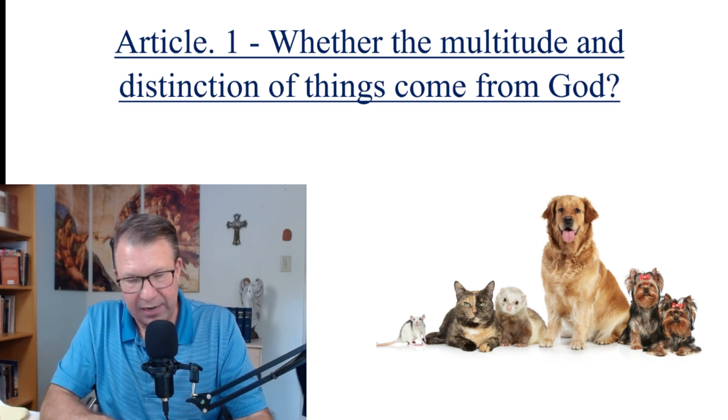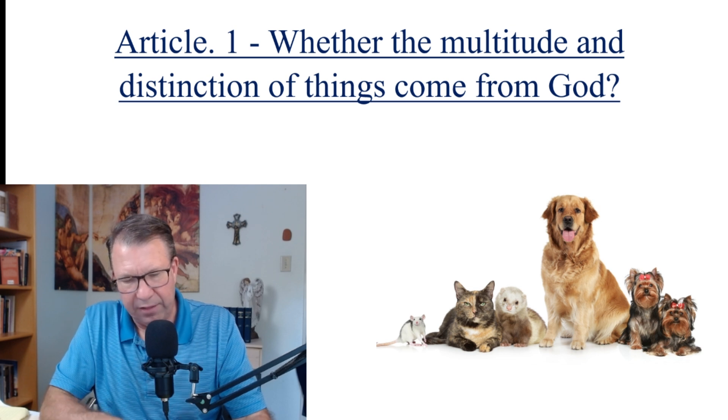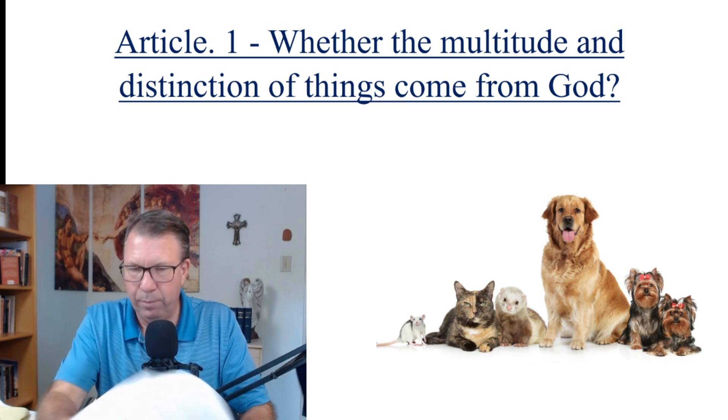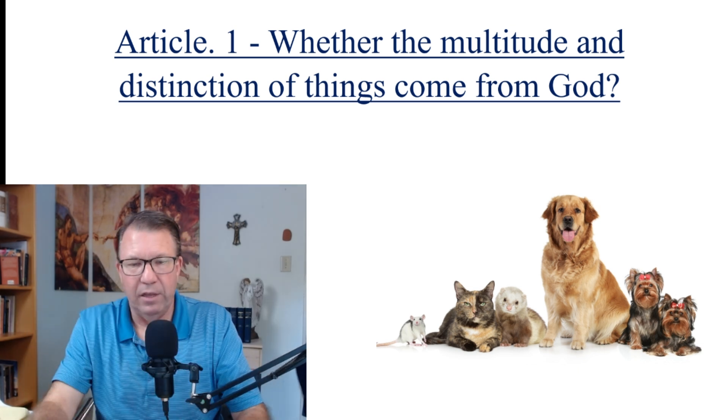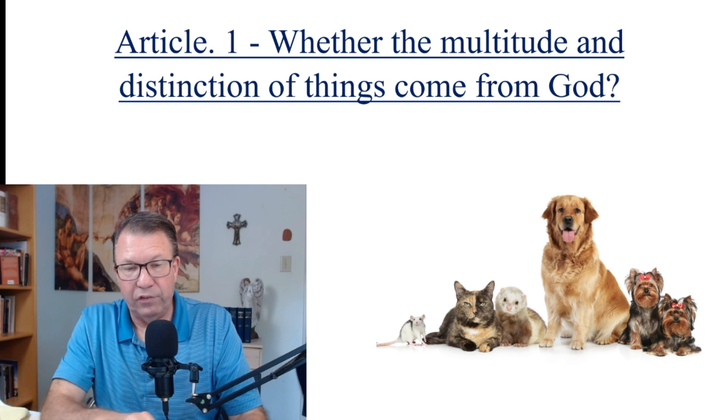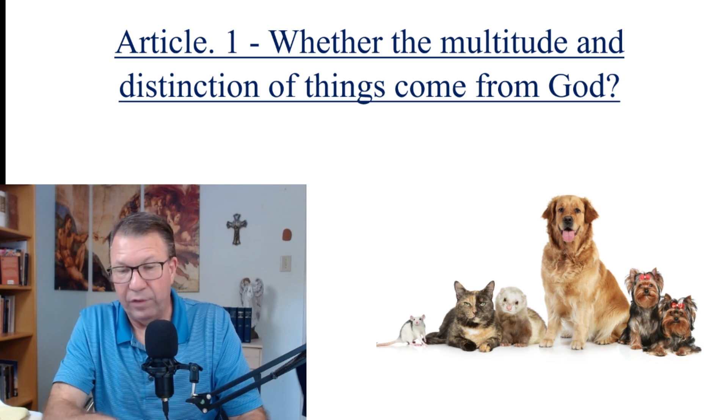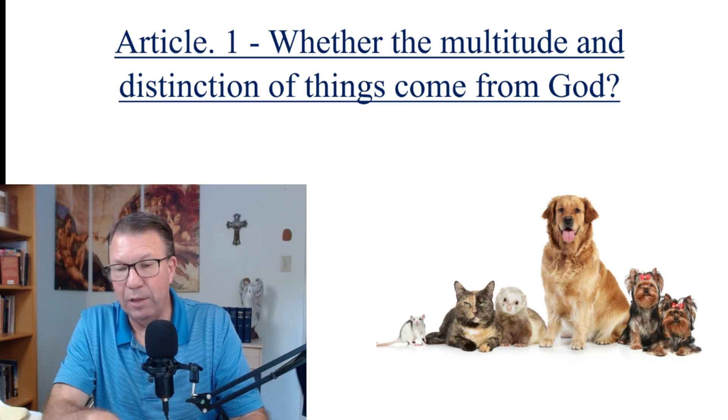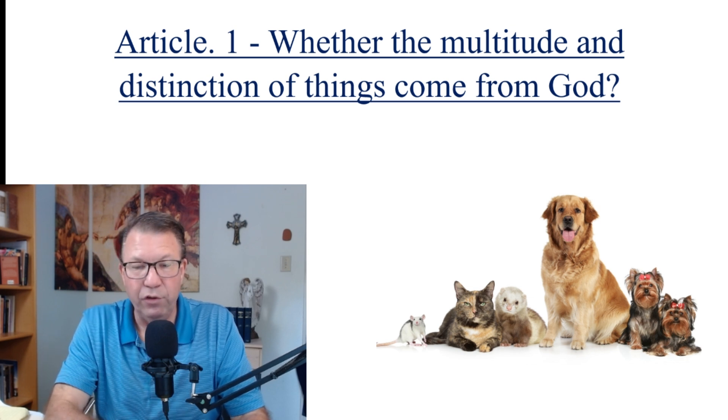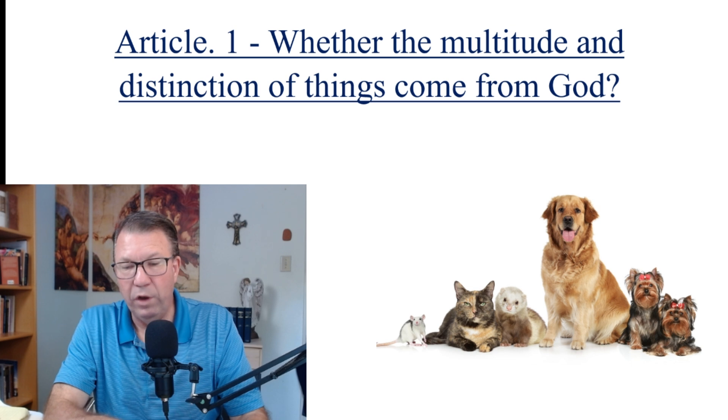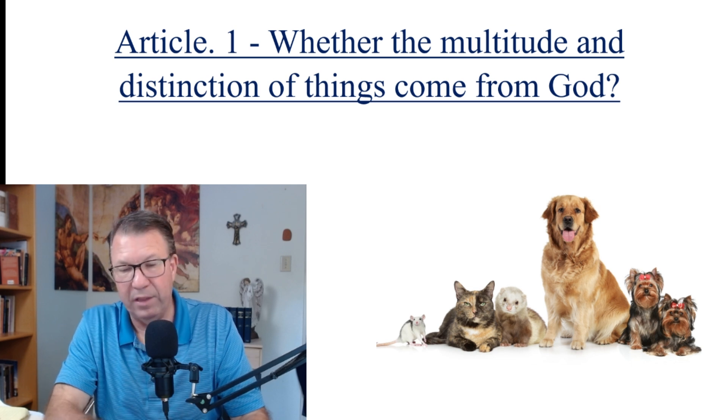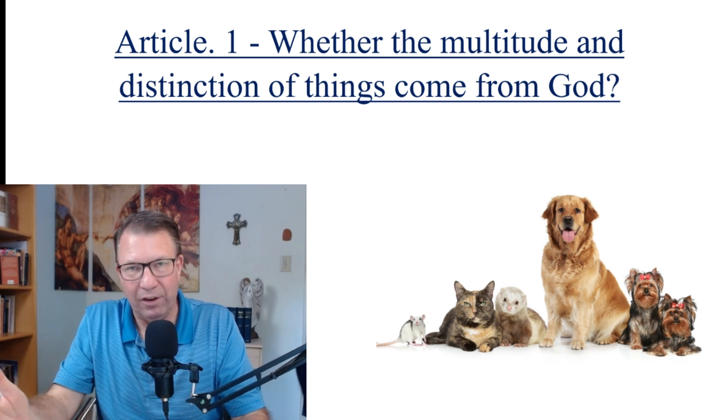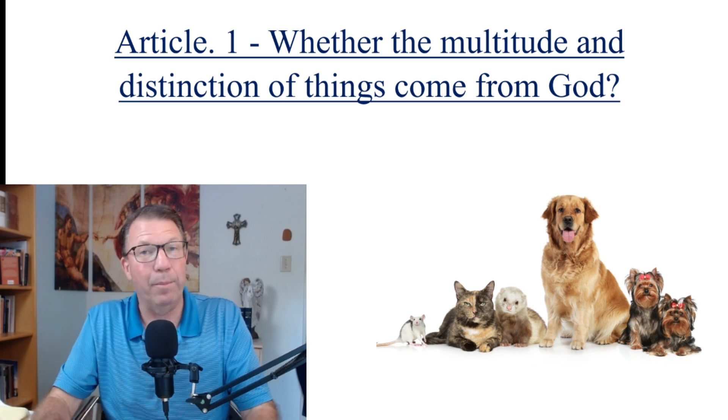But this opinion cannot stand for two reasons. First, because it was shown above that to create belongs to God alone. That's what I just referred to. And hence, what can be caused only by creation is produced by God alone. That is, all those things which are not subject to generation and corruption. Secondly, because according to this opinion, the universality of things would not proceed from the intention of the first agent, but from the concurrence of many active causes. So, he's refuting Avicenna. He's refuting what Democritus said.